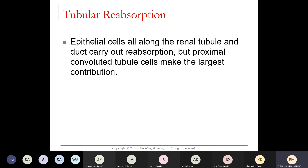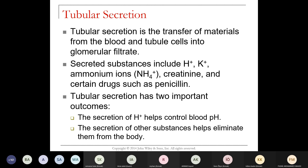Epithelial cells along the renal tubule and renal ducts carry out the role of reabsorption. The proximal convoluted tubules make the largest contribution to reabsorption. Tubular secretion is the transfer of materials from blood into the glomerular filtrate. Substances secreted include potassium, hydrogen, ammonia, antibiotics, and other drugs. The secretion of hydrogen ions is what helps regulate blood pH.